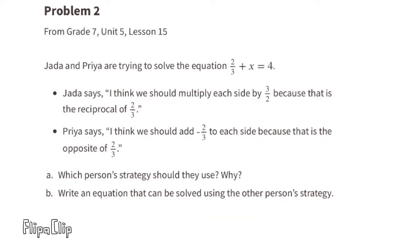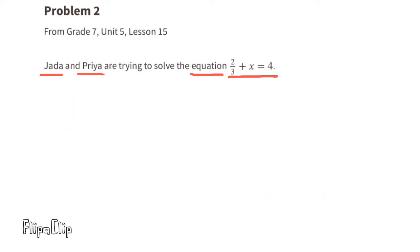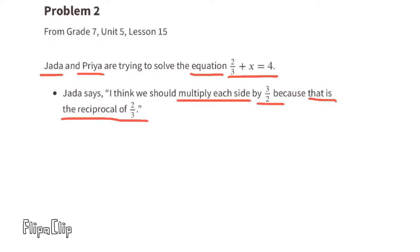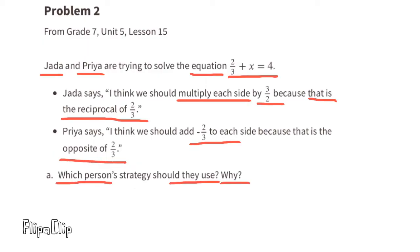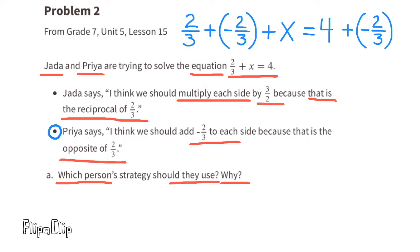Problem Number 2, from seventh grade Unit 5, Lesson 15: Jada and Priya are trying to solve the equation two-thirds plus x equals four. Jada says to multiply each side by three over two, the reciprocal of two-thirds. Priya says to add negative two-thirds to each side, the opposite of two-thirds. I think they should use Priya's strategy.